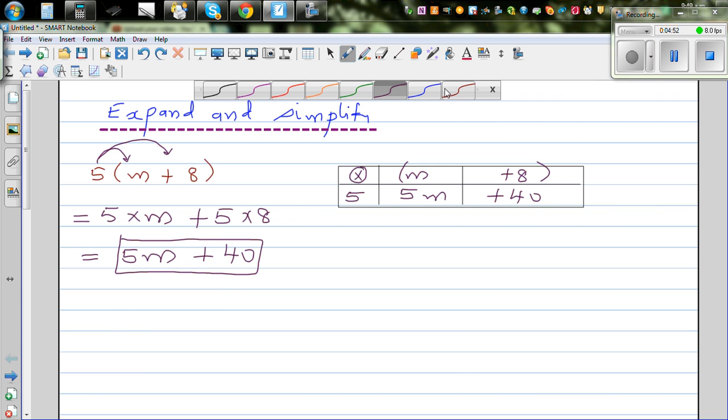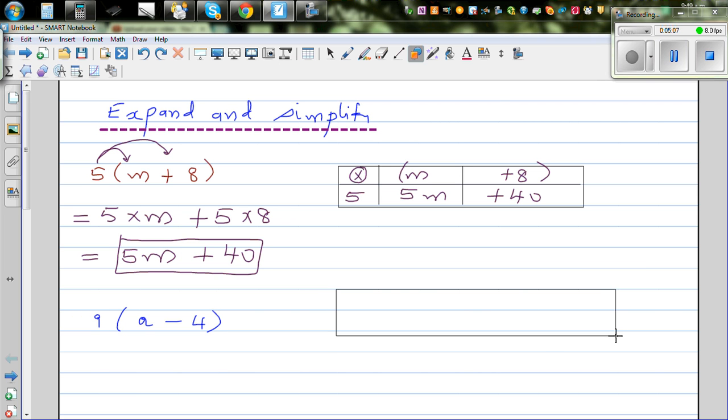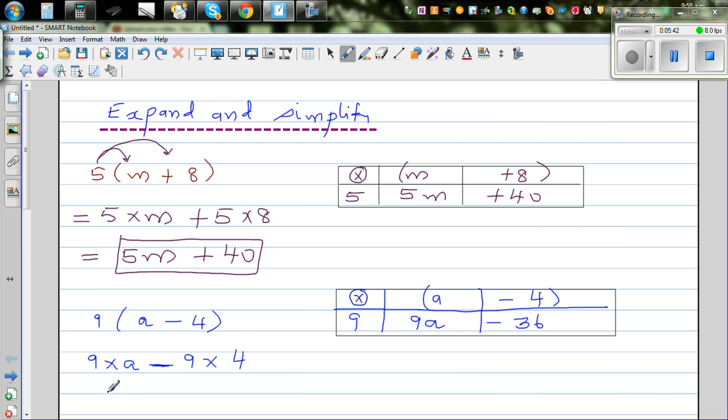Let's take one more example. Say 9 times a minus 4. Let me draw a square or rectangle and then split this. This is your 9 times a, I'll put this in the bracket, minus 4. Now you go 9 times a, which is 9a, and 9 times negative 4 is minus 36. And if you want to do directly, this is 9 times a, minus sitting there, minus 9 times 4, which is 9a minus 36.